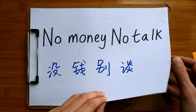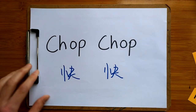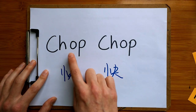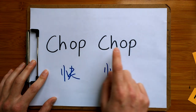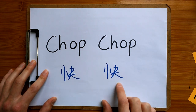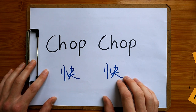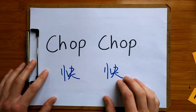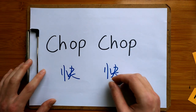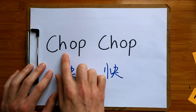And let's look at the last one: "Chop chop," which comes from the Chinese phrase 快快, meaning to do something quickly. Maybe you're telling your friends let's go to the cinema, and your friend's taking a long time getting ready, and you say, "Come on, chop chop, let's go."